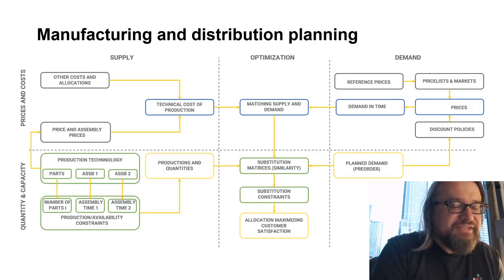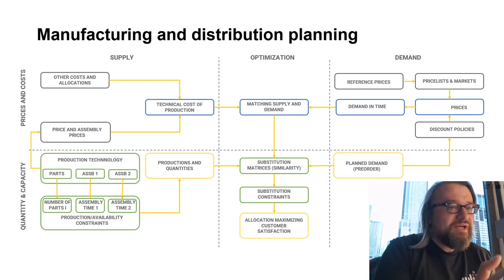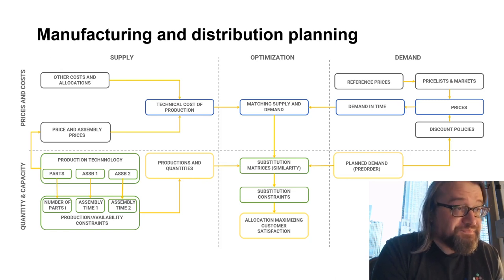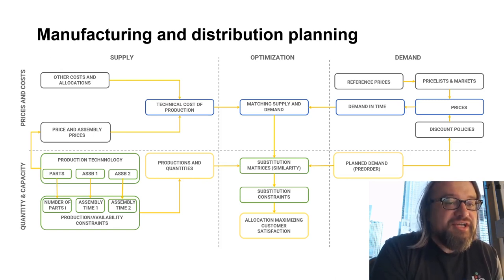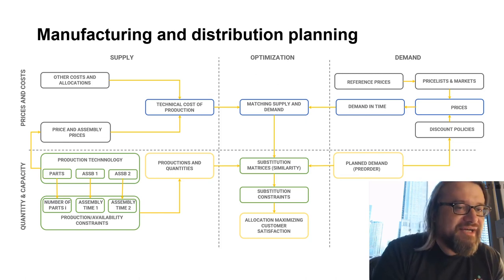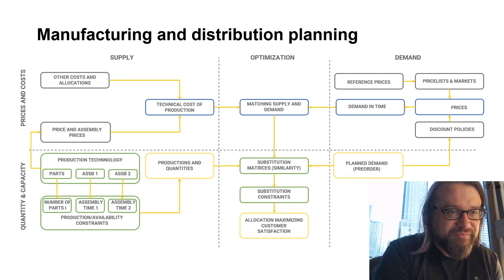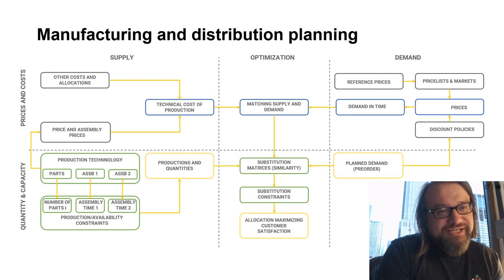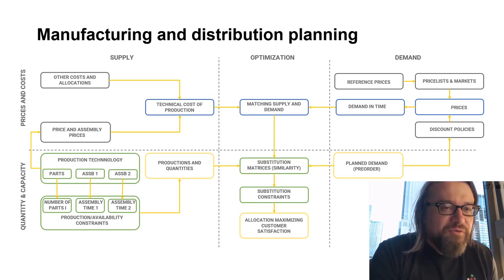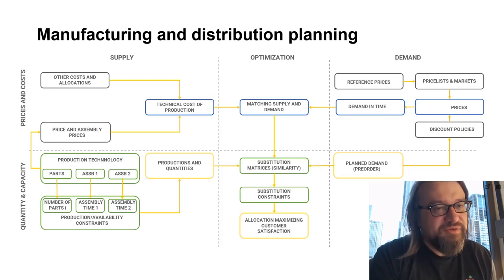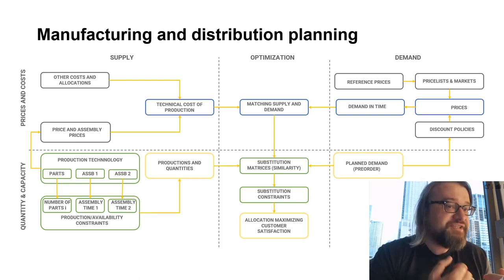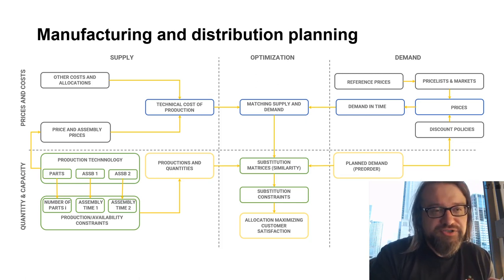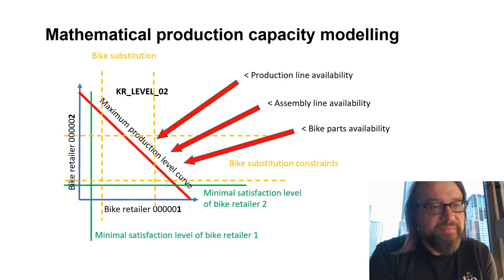Looking at the major model assumptions: on one side we have supply — availability of parts, availability of workforce, various production technologies, and quantities of components that can be purchased. On the other hand, we have demand. It's not easy to meet supply and demand if you have a demand for a green bike but there is no green paint available. You can present your customer a blue bike instead, or swap one component for another, because sometimes bike components are simply not available. The goal of the model was to adjust the production process to match market needs as much as possible.